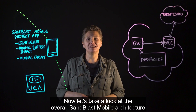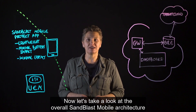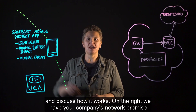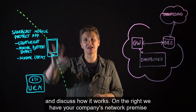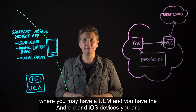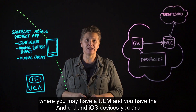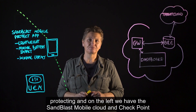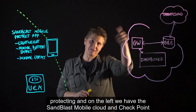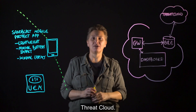Now let's take a look at the overall Sandblast Mobile architecture and discuss how it works. On the right, we have your company's network premise, where you may have a UEM and you have the Android and iOS devices you are protecting. And on the left, we have the Sandblast Mobile Cloud and Checkpoint Threat Cloud.